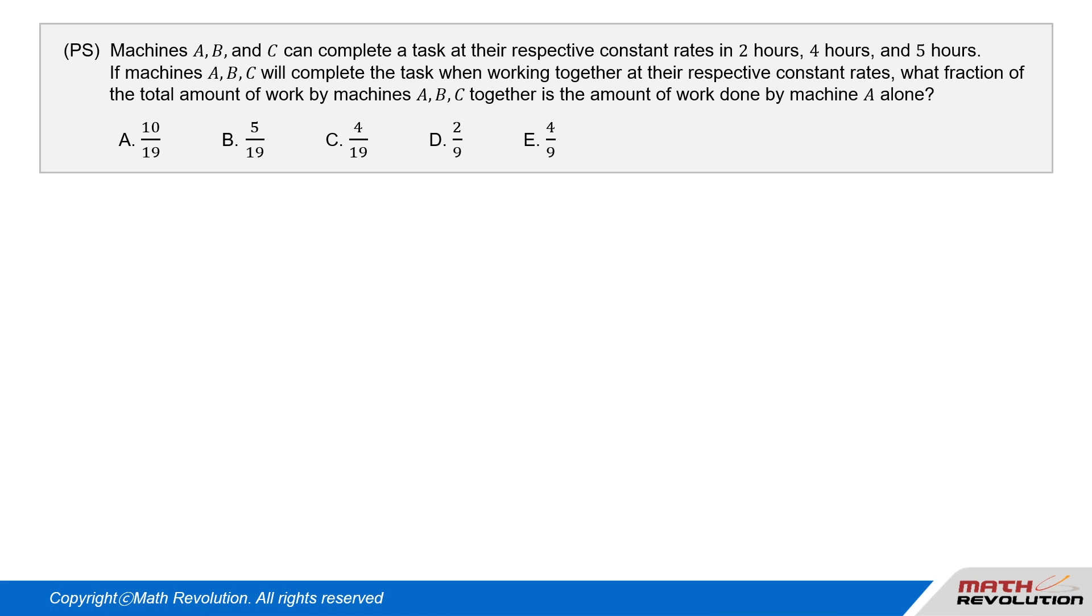If Machines A, B, and C will complete the task when working together at their respective constant rates, what fraction of the total amount of work by Machines A, B, and C together is the amount of work done by Machine A alone?